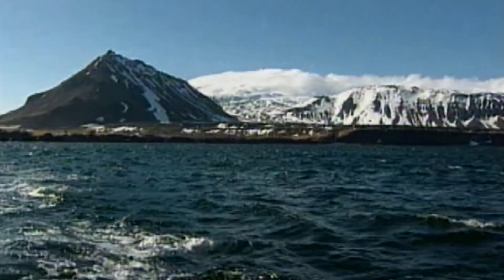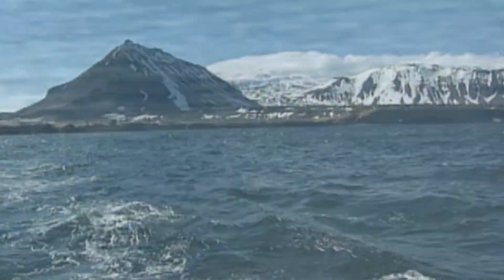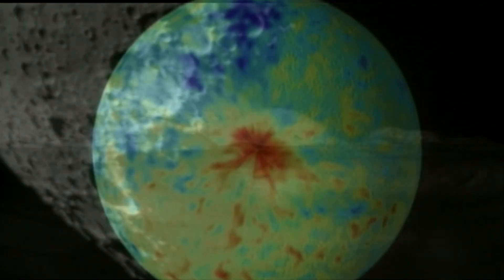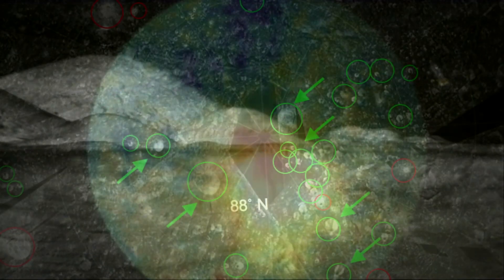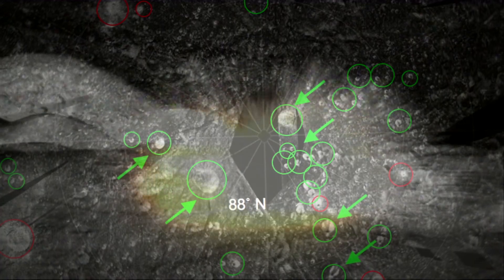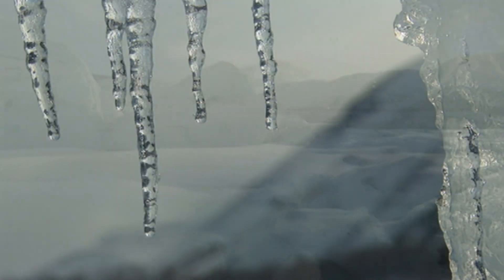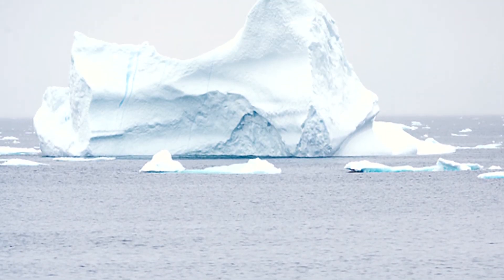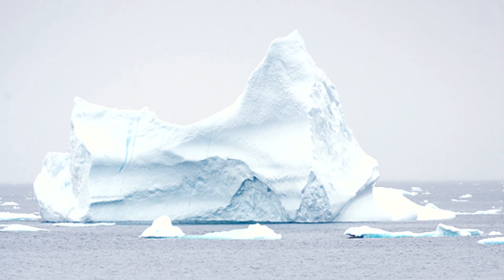Cutting through layers of ice can require axes, chainsaws, or 3,000-ton icebreakers. As much as researchers know about ice, there are still unsolved riddles about what really happens on the surface of water and ice, and about ice on other planets, moons, and asteroids. Think of this story as just the tip of the floating mass of H2O in solid form.